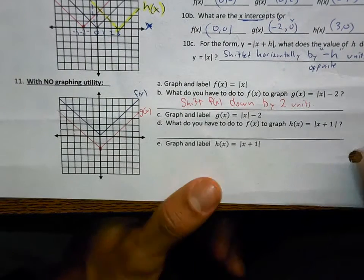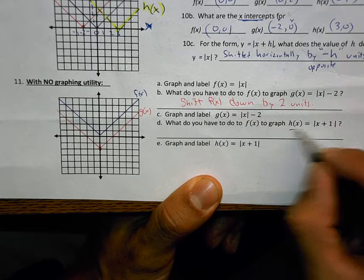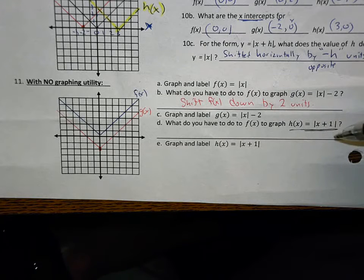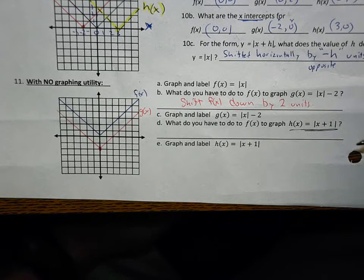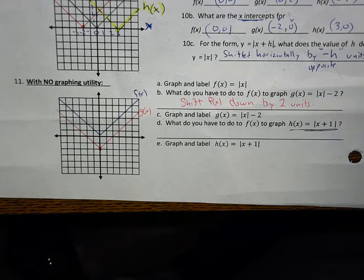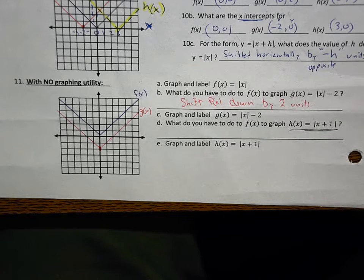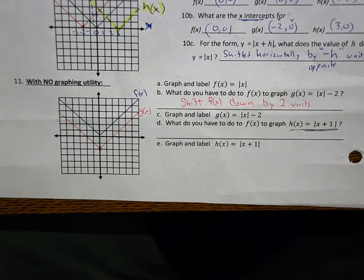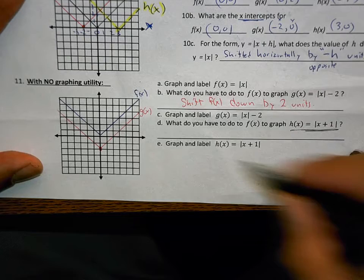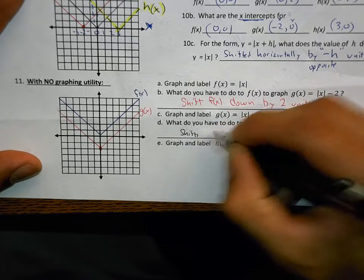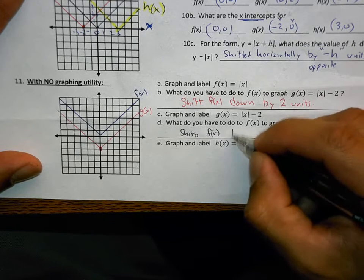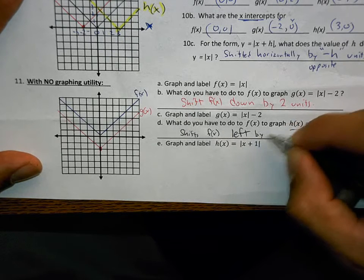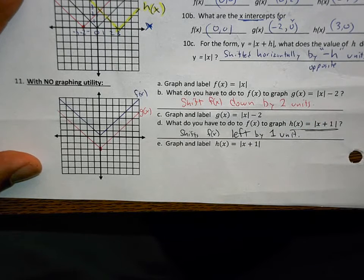So the next one, we've done part C. What do you have to do to f of x? To graph h of x is equal to the absolute value of x plus 1. This time, the plus 1 is inside the parentheses, or inside the brackets. Do you know which way this is going to shift it? If you do know, tell the person you're sitting next to, please.